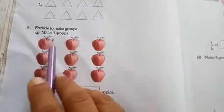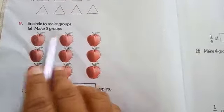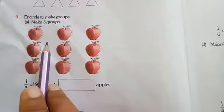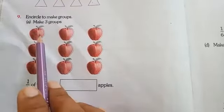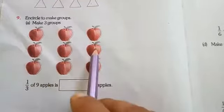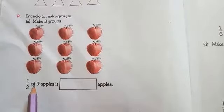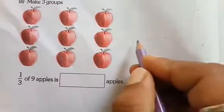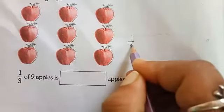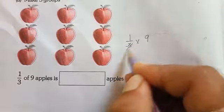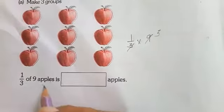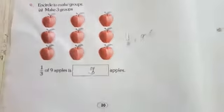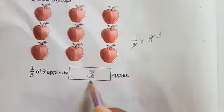Now our next question is: encircle to make groups — make three groups. Here you can see some apples. How many apples are there? 1, 2, 3, 4, 5, 6, 7, 8, 9 — so 9 apples are there. We have to find 1 third of 9 apples, that means 1 third multiplied by 9. In the 3 times table, 3 threes are 9, so 1 third of 9 apples is 3 apples.